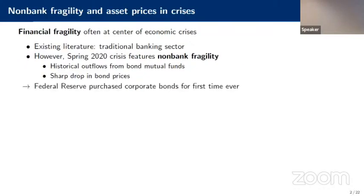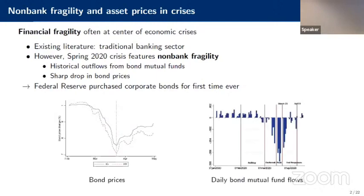This led to unprecedented policy intervention from the Federal Reserve in March 2020, as Alan discussed in his paper yesterday, and that helped significantly mitigate the outflows from mutual funds as well as the drop in prices. Here I plotted the change in bond prices during spring 2020 — you can see how the market was unraveling for bonds, both investment grade and high yield, and once the policy announcement happened, the bond price drop reversed. At the same time, you see significant outflows from mutual funds that were also mitigated by the policy announcement.